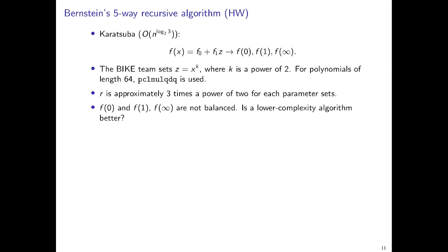Okay, now we can talk about how we perform multiplications in the ring R. On Haswell, one simple thing you can do is to use Karatsuba. So in Karatsuba, we write each polynomial f as f0 + f1*z. And we evaluate f at 0, 1, and infinity. And then we do this also for g. And we do a pointwise multiplication. And then we do some interpolation in order to get the product. And the BIKE team sets z to x^k, where k is the power of 2. And for polynomials of length 64, they just use PCLMULQDQ.